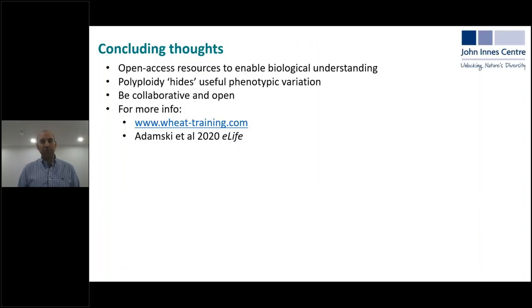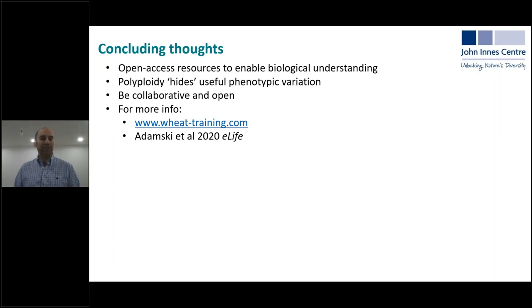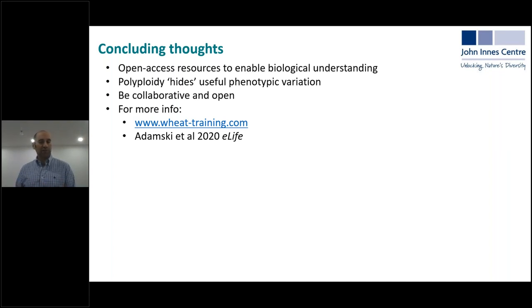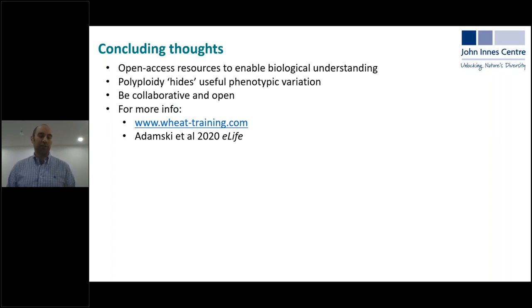Just some concluding thoughts: what we've done as a community is really outstanding. We can continue to be very open and provide open access resources to enable biological understanding — it should be that those who are able to make resources and have the privilege of funding make them available for the community. The mission is not to get the highest-impact paper; the mission is to feed the world, and we can't forget that. Polyploidy hides useful phenotypic variation — we have a huge opportunity as a wheat community to take advantage of genomics to go after traits that have been very difficult. By combining variation across homologs or finding dominant mutations, we'll be able to open up variation that breeders and natural selection has not been able to see before. If you need more information, it's all on the Wheat Training website and in the eLife paper.